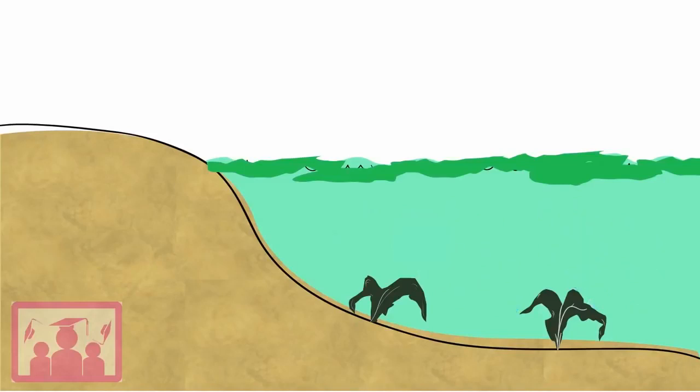Water without oxygen is called anoxic. If the water turns anoxic, all non-bacterial life in the water, including fish and other animals, will die.